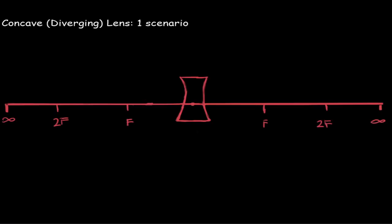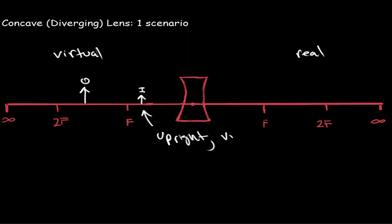Now let's look at concave or divergent lenses. There's only one scenario that can occur for a divergent lens. Remember that one side is the virtual side and the other is the real side. If I place my object on the virtual side, your image will always be upright, virtual, and reduced — smaller than your object. All you need to remember is that for a concave divergent lens, your image will always be upright, virtual, and reduced.